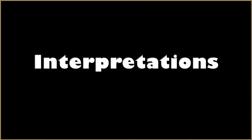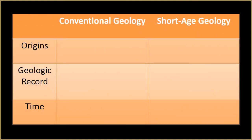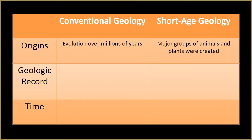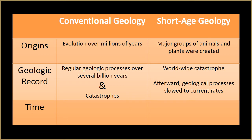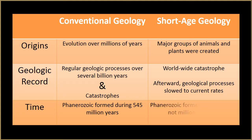Next, let's compare the interpretations resulting from conventional and short-age geology — specifically, how each looks at origins, the geologic record, and the issue of time. Conventional geology says that life evolved over millions of years, while short-age geology says that major groups of animals and plants were created. Conventional geology explains the geologic record by a combination of regular geologic processes combined with some catastrophes. Short-age geology explains the geologic record as the result of a worldwide catastrophe, after which geologic processes slowed to their current rates. Conventional geology estimates that the Phanerozoic portion of the geologic column was formed in about 545 million years, while short-age geology suggests it formed in thousands, not millions, of years.